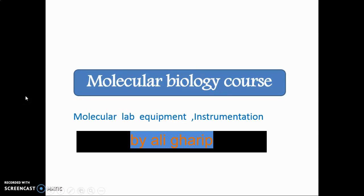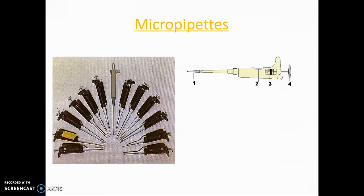Molecular lab equipment instrumentation: micropipettes. What is a micropipette? A micropipette is a common yet essential laboratory instrument. It is used to accurately and precisely transfer volumes of liquid in the microliter range. Micropipettes are available in single channel and multi-channel variants.